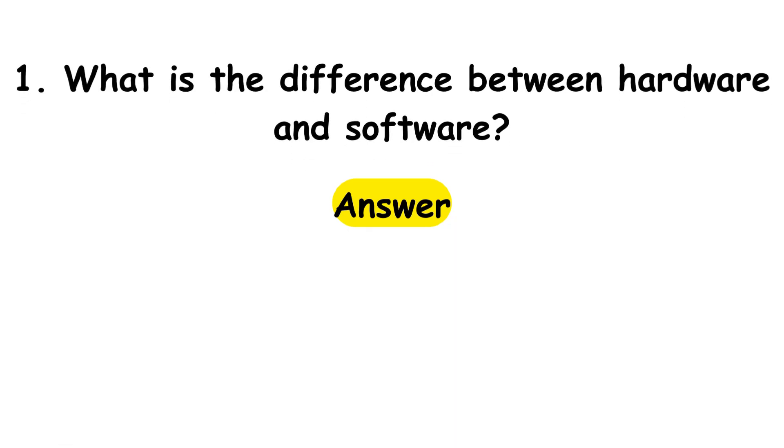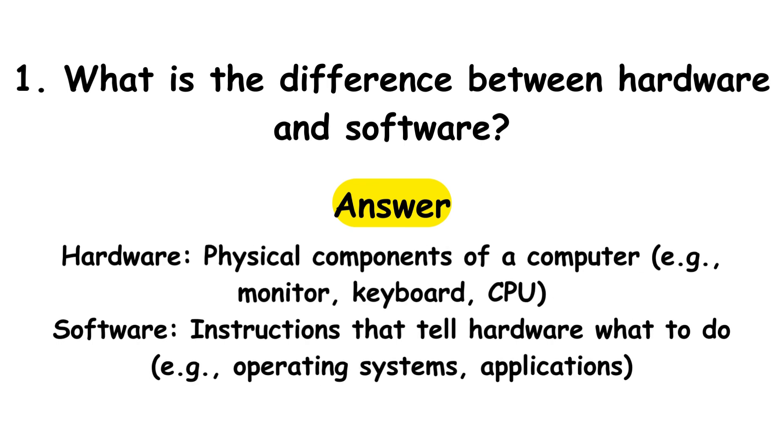Question 1: What is the difference between hardware and software? Answer: Hardware - physical components of a computer. Example: monitor, keyboard, CPU. Software - instructions that tell hardware what to do. Example: operating systems, applications.